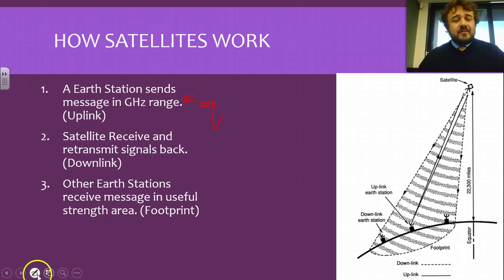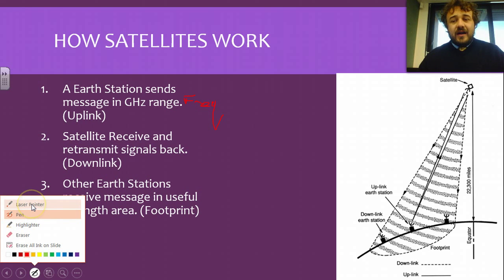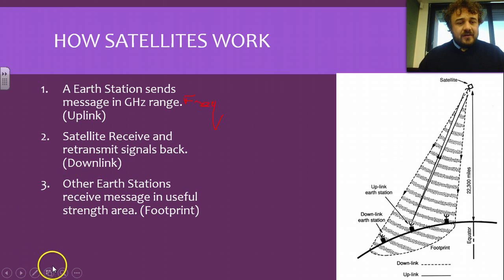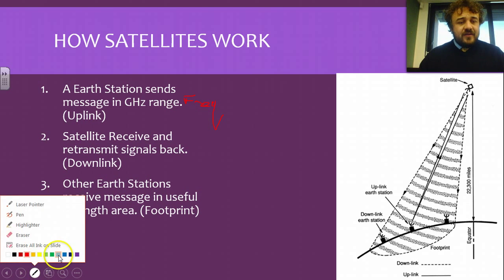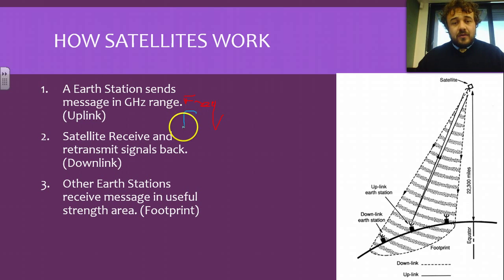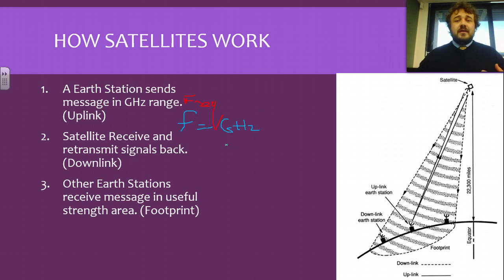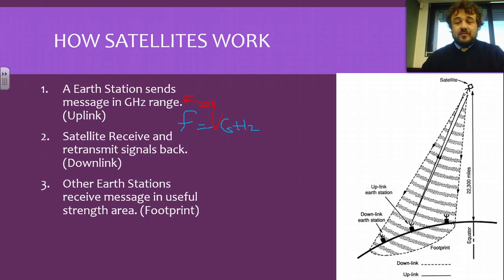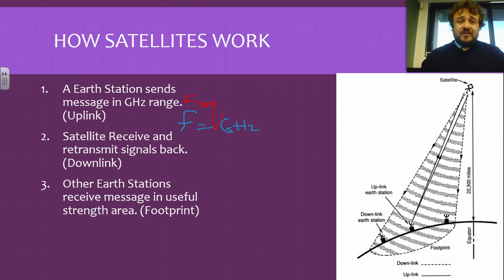The Earth sends messages via uplink — the sending of signals is called uplink — and we send these messages at what we call the gigahertz rate, so frequency equals gigahertz. The satellite receives it and then transmits it back, sending the signal back to wherever it's going, and that's downlink. So uplink is where we send signals to the satellite, downlink is where the satellite sends it back.